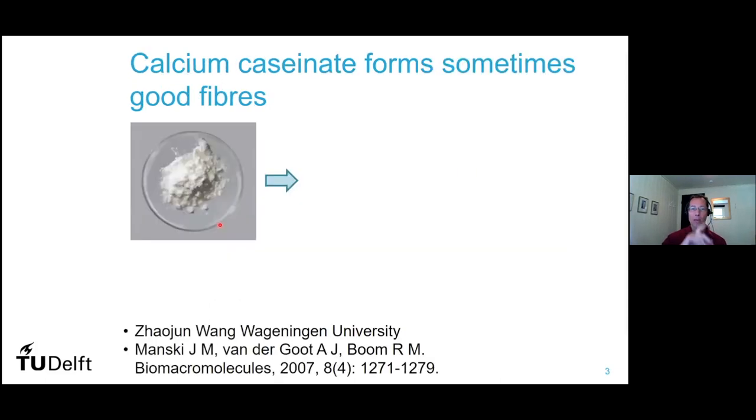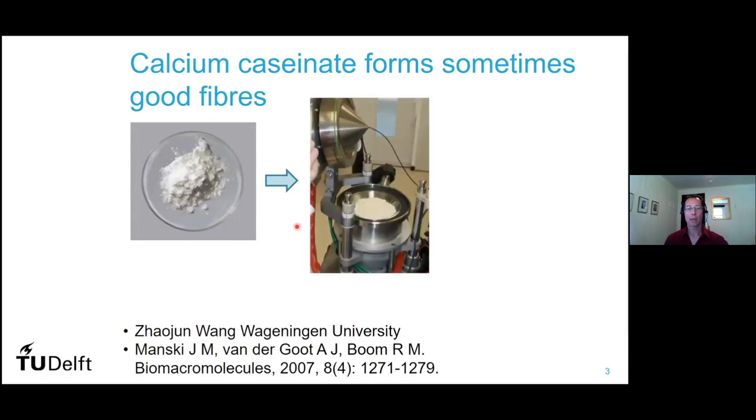And we worked on a special kind of sample. It's kind of a model system. If you have calcium caseinates, then sometimes they form really nice fibers. And the reason to work on it with shear is that you can make really huge pieces of a meat analog. The real purpose is to make something that's really representing a steak.